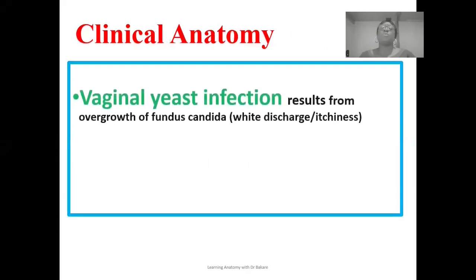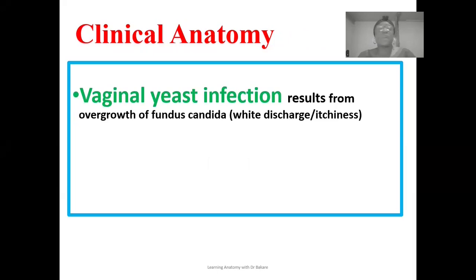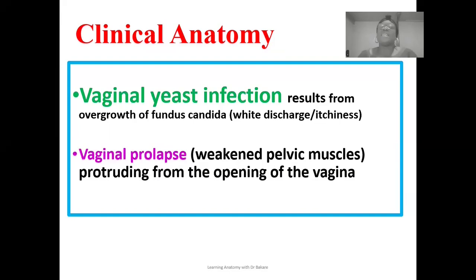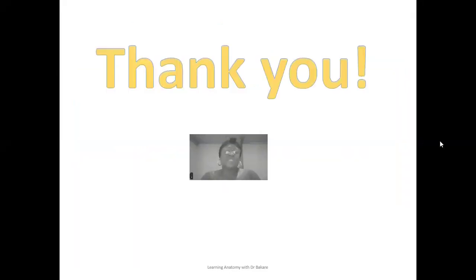For clinical anatomy, we'll highlight vaginal yeast infection. When the ecosystem of microorganisms within the vagina canal becomes imbalanced — when one organism overshoots the others — this leads to infection. An overgrowth of a particular fungus, Candida, leads to vaginal yeast infection, which presents with white discharge and itchiness. We can also have vaginal prolapse, which occurs when there is weakness in the pelvic muscles and ligaments supporting the vagina canal. This leads to displacement of the vagina from its position, seen protruding out of the vaginal opening. Thanks for watching.